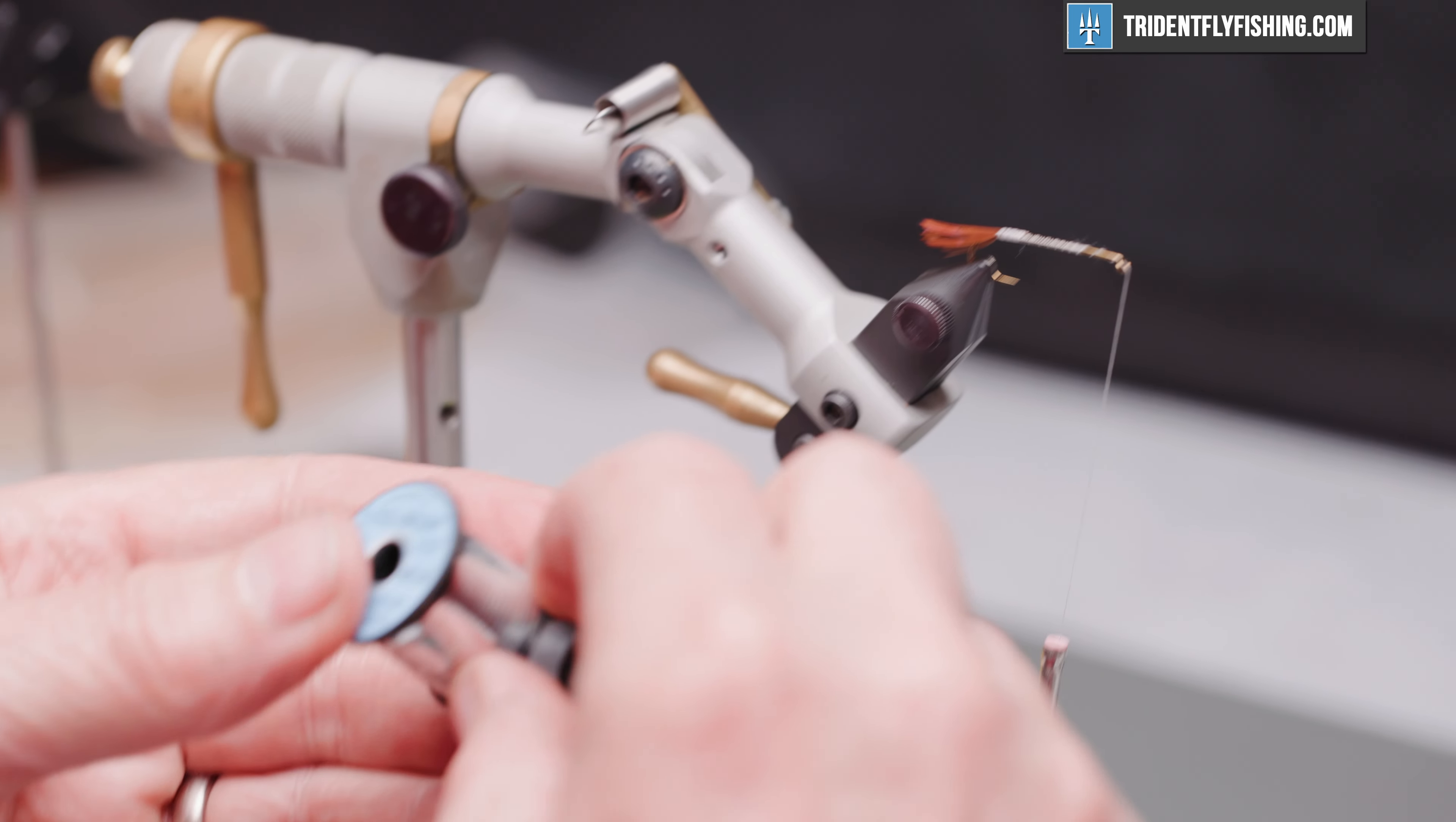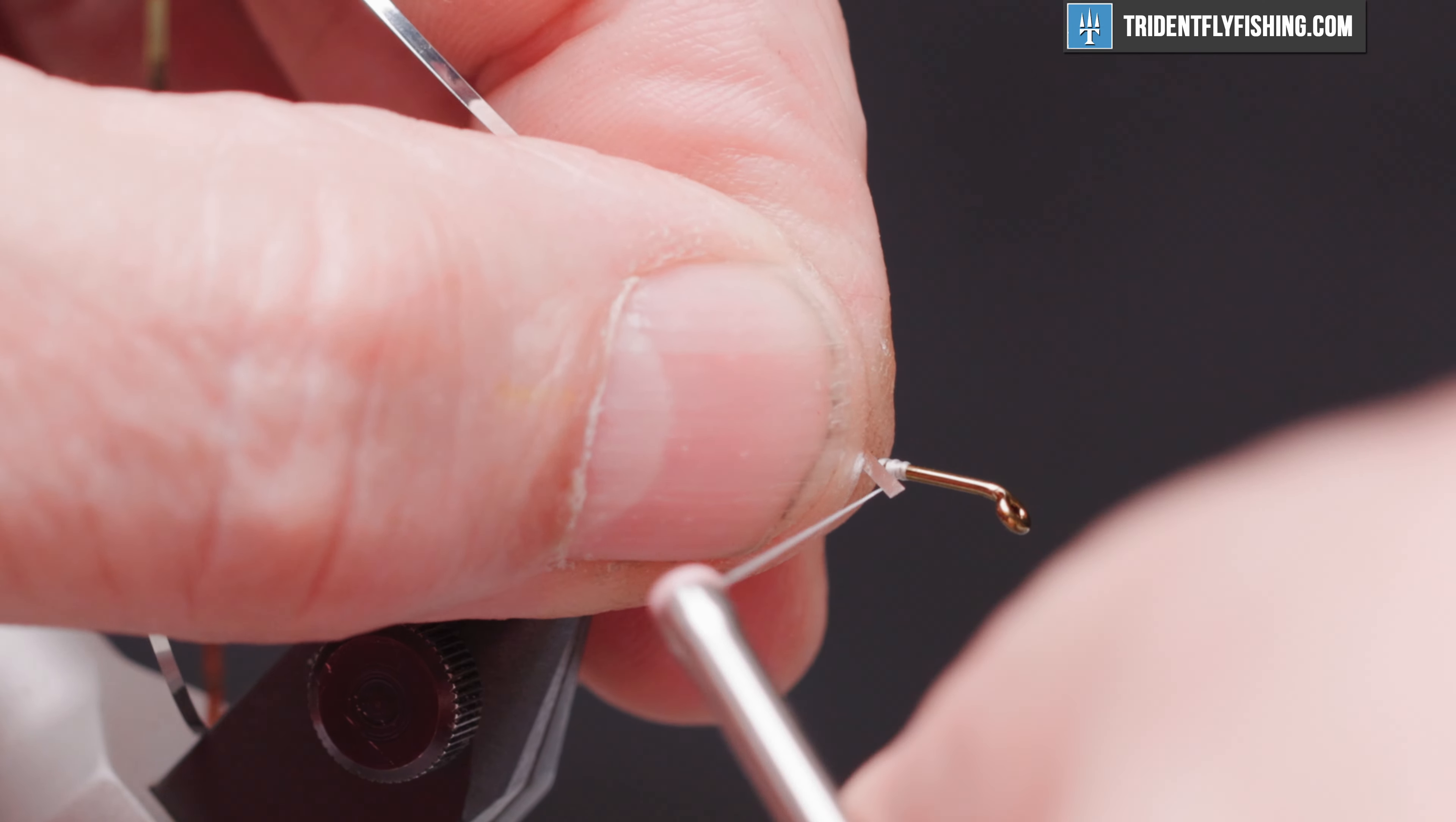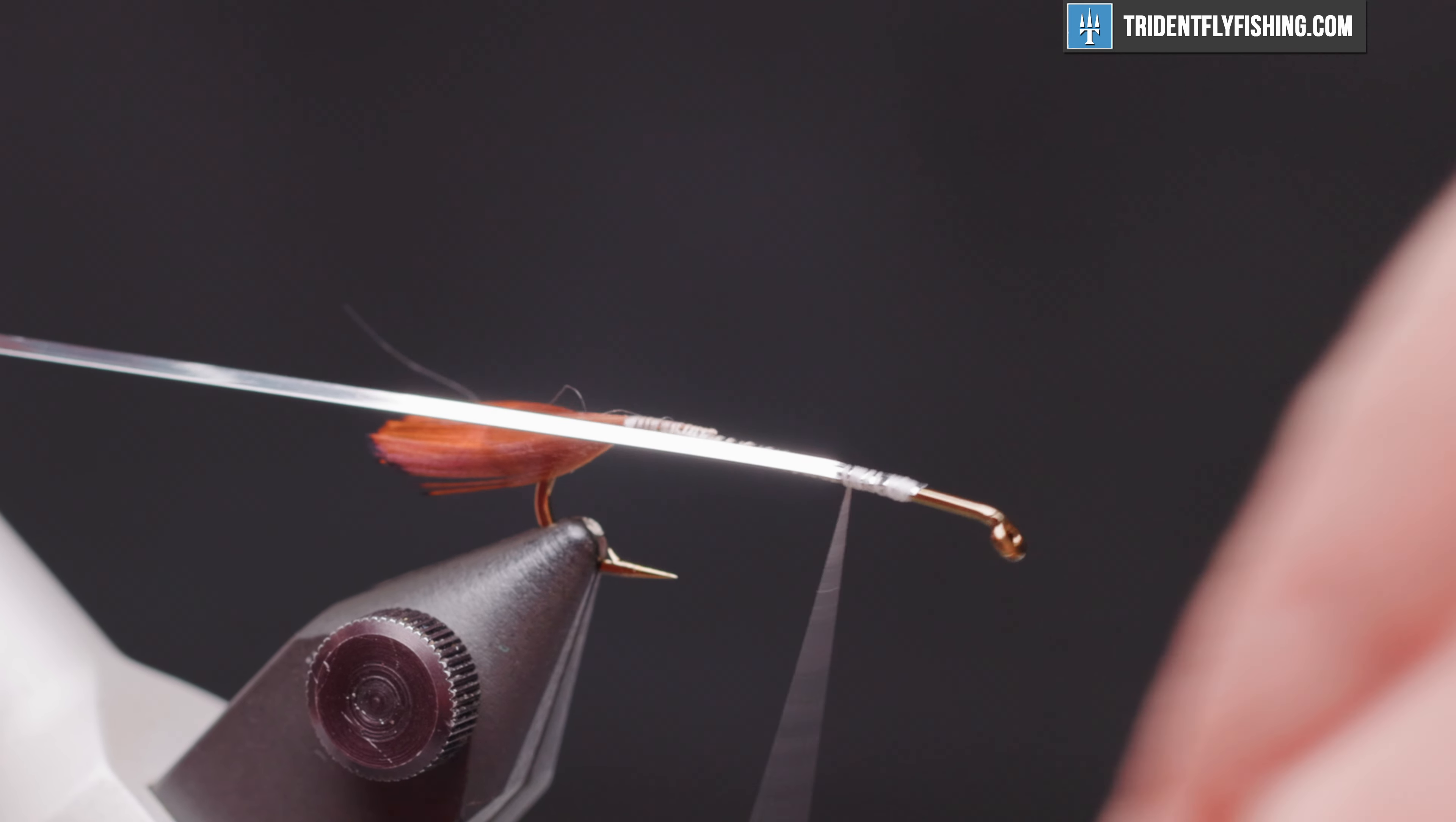We'll run our thread back up to our initial tie-in point. We're going to tie in our rib material. Our rib is Uni Mylar. This is a size 14 and the color is silver gold. And we want the gold side to show. So we're going to tie it in with the silver side out.